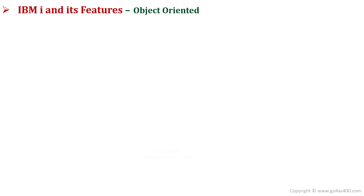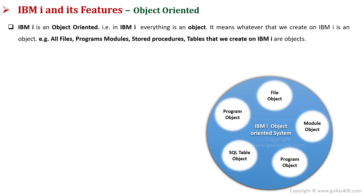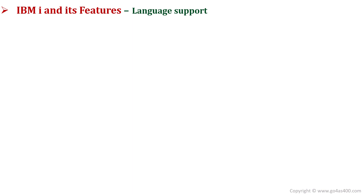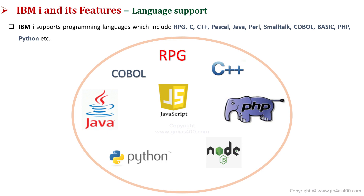One of the features of IBM i is that it is object-oriented — in IBM i, everything is an object. Whenever we create something on IBM i, for example files, modules, stored procedures, or tables, these are all objects. Similar to Windows or Linux where everything is files of different file types, in IBM i we have objects of different object types. IBM i supports programming languages like RPG, C, C++, PHP, Python, etc., supporting all modern-day programming languages.